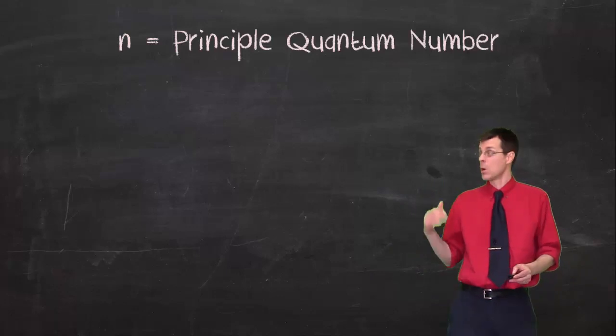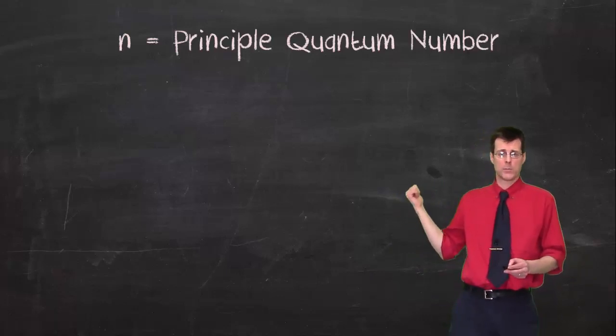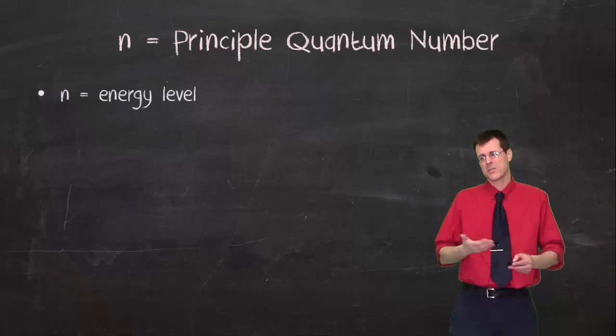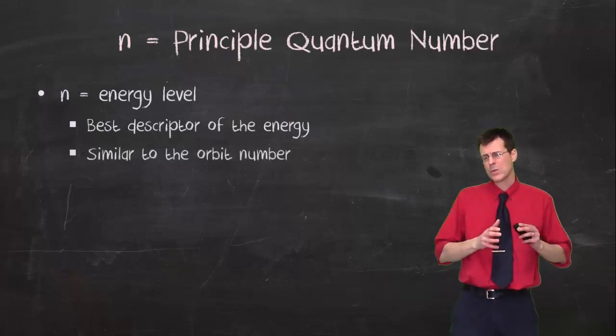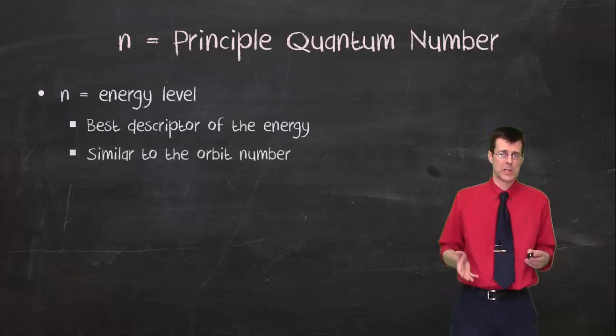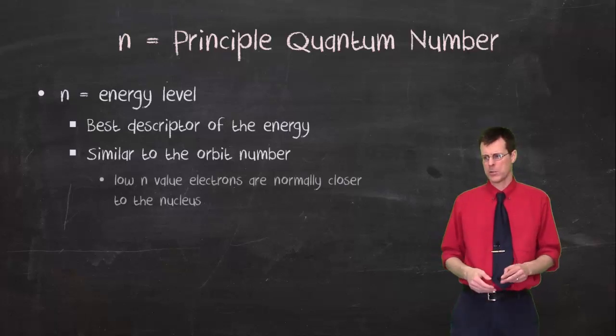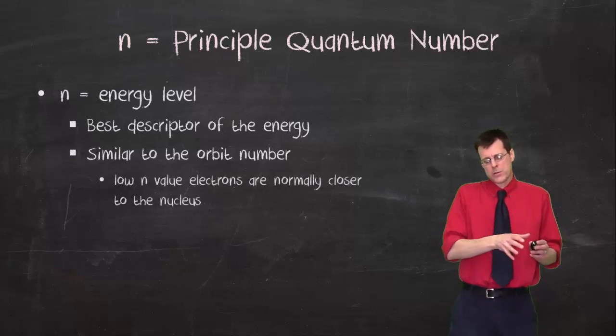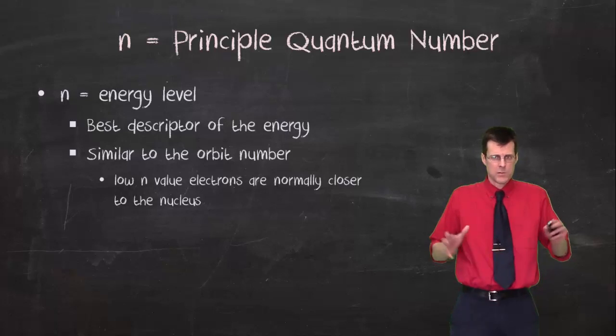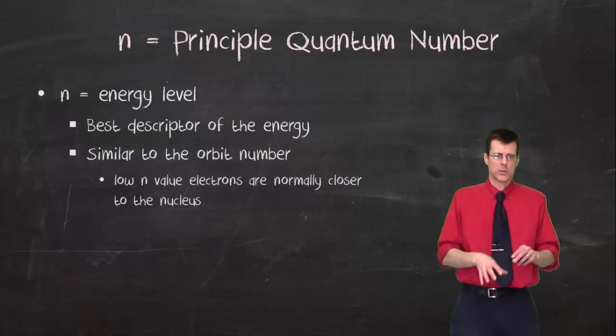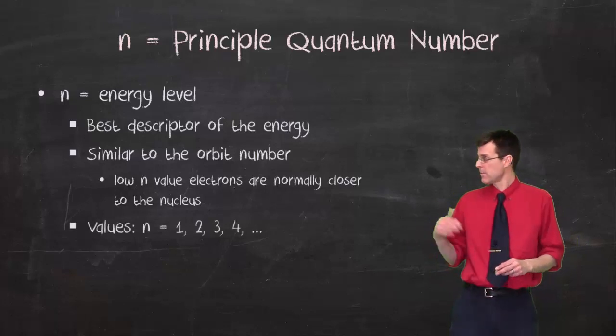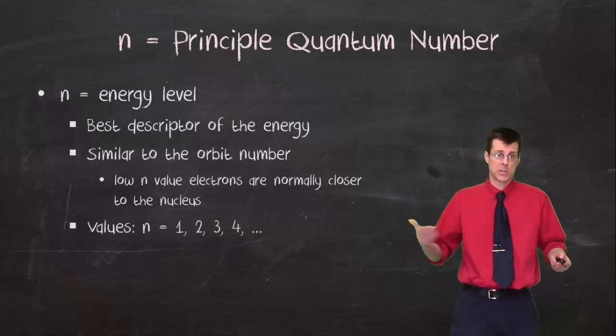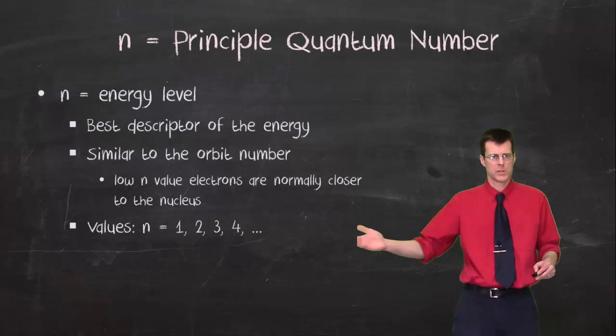The first one is called n, principal quantum number. Looks suspiciously like the n value from Bohr theory. And it kind of serves the same purpose. We do call it the energy level. And it does describe the energy of the electron. It is similar to the old orbit number, but we don't want to use that terminology. The smaller the n value, the more likely you are to find the electron close to the nucleus. Not guaranteed, but more likely. And the values are the simple counting numbers like you would have had in Bohr theory. One, two, three, four, and so on.